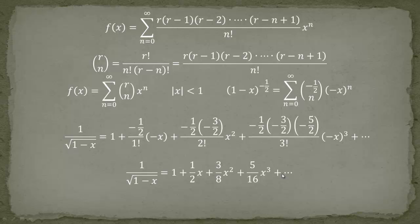We will now use this for Einstein's equation. An important takeaway: if x is very small, then 1 over the square root of (1 - x) can be approximated as 1 plus (1/2)x.